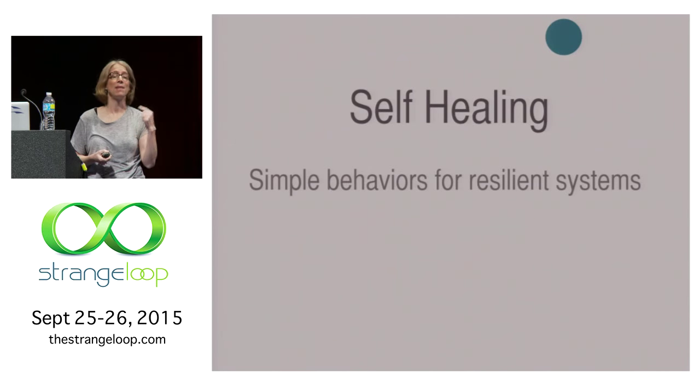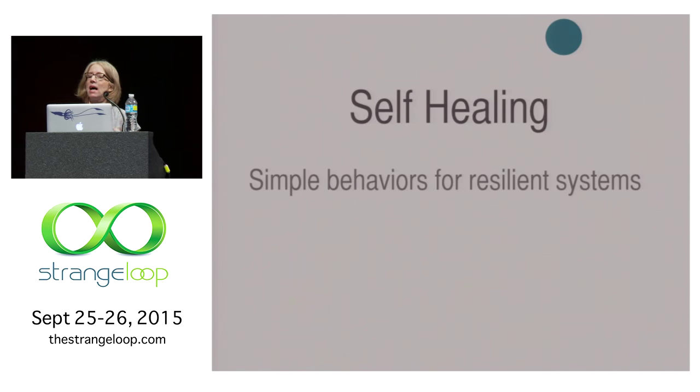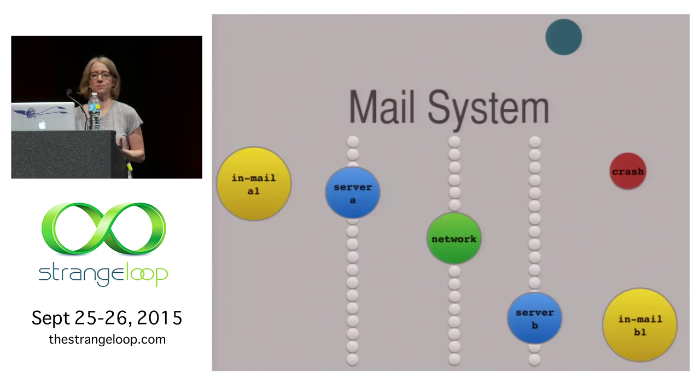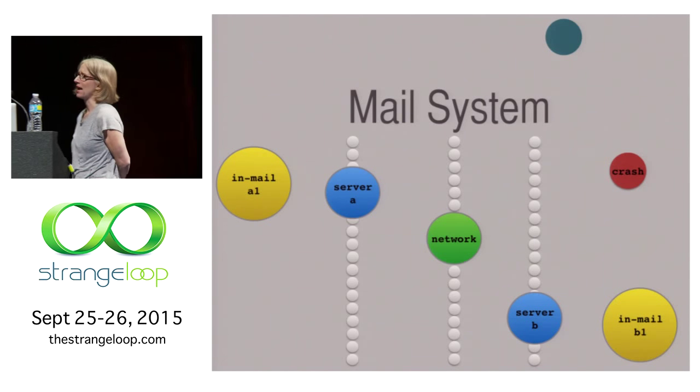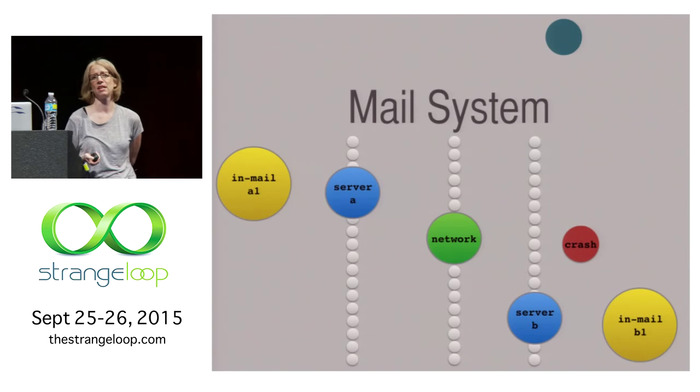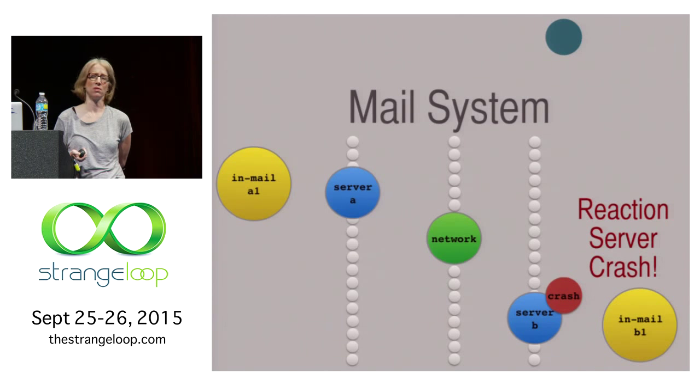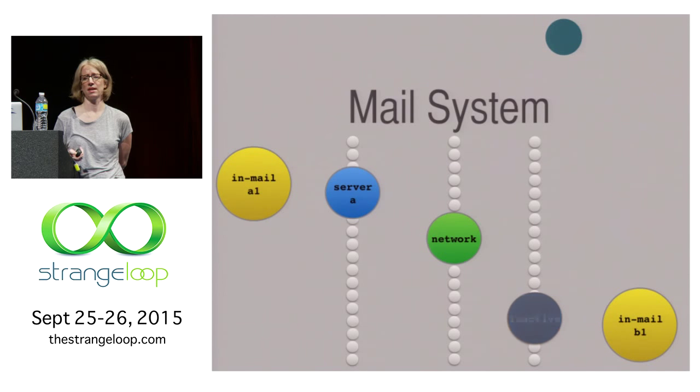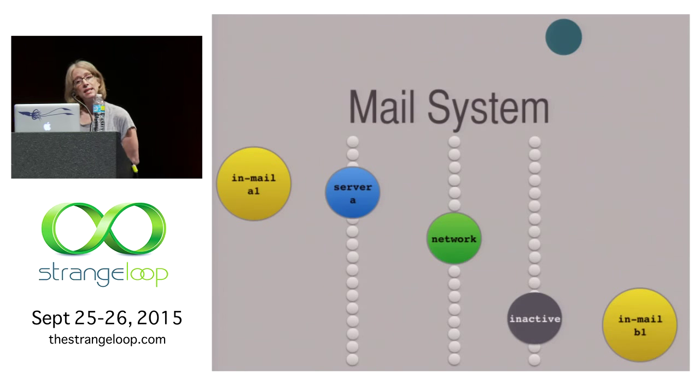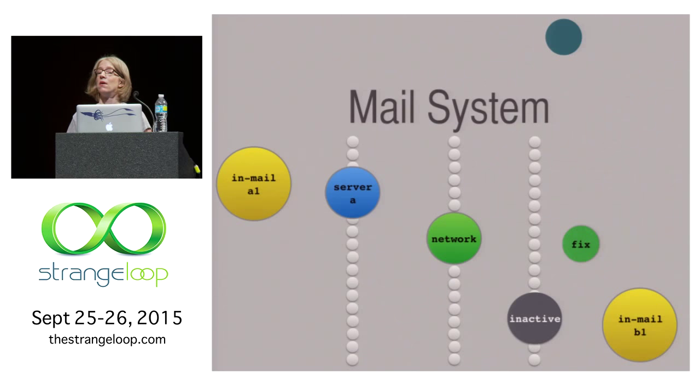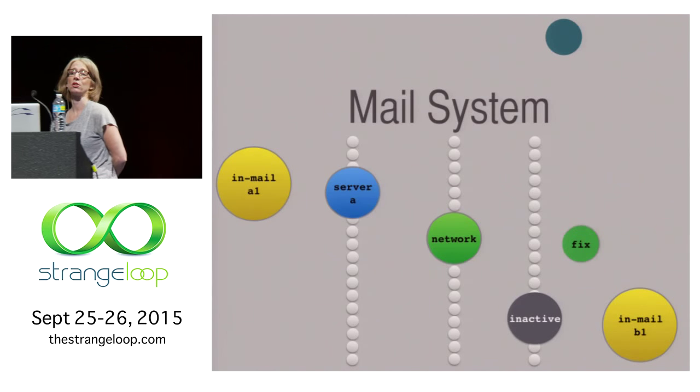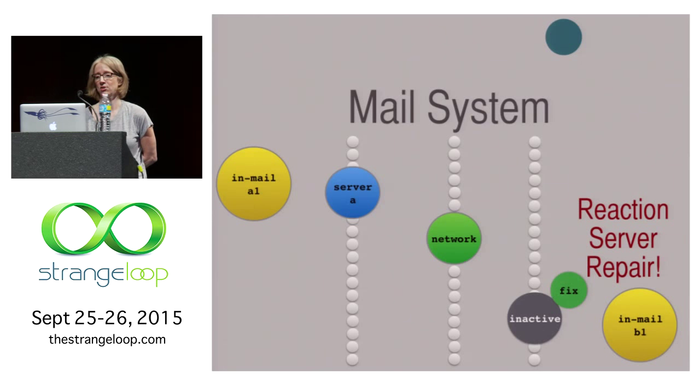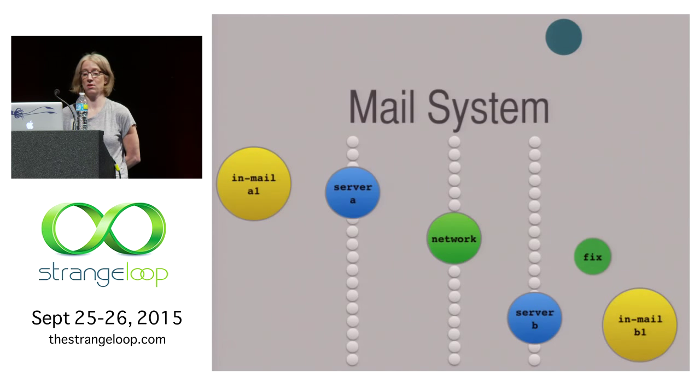We can make this a self-organizing and self-healing mail system. Because these simple behaviors can combine to build resilient systems. We can introduce another molecule called a crash molecule. This bounces around, and whenever it actually meets a server molecule, it'll react with it and turn it into an unhappy, inactive server molecule that will no longer react with things. Or react with the mail messages. But happily, we can have a sentinel fixed molecule that is patrolling the area, and just randomly, if it reacts with an inactive server molecule, it'll turn it into a functioning server molecule again. And it can repair it. So, wow.